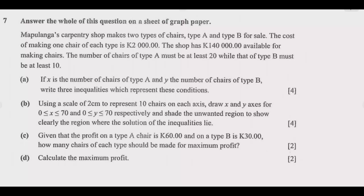This question is linear programming. I would encourage everyone to answer this as the first option question from section B, because it is one of the easiest questions and you can get all the marks as efficiently as possible. Let us dissect this question one by one. Starting with part A — if X is the number of type A chairs and Y is the number of type B chairs, write three inequalities.